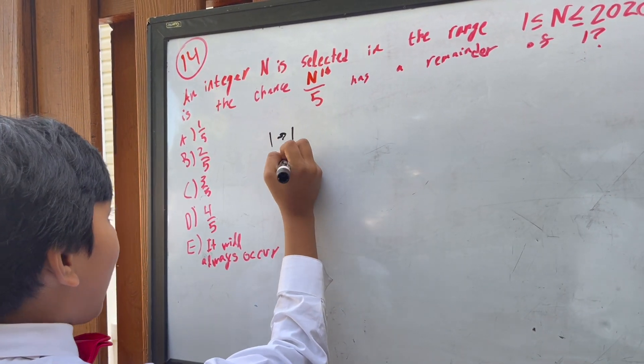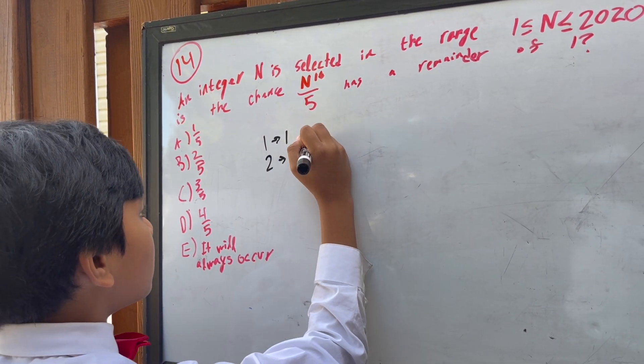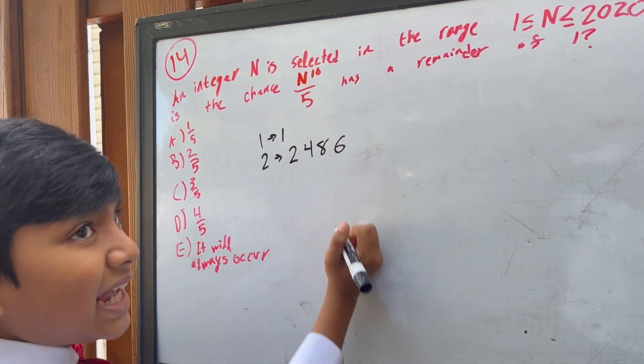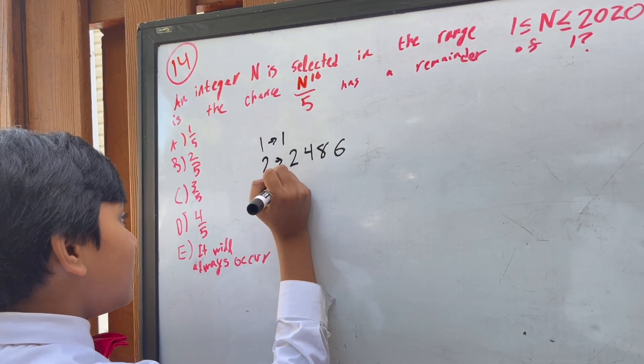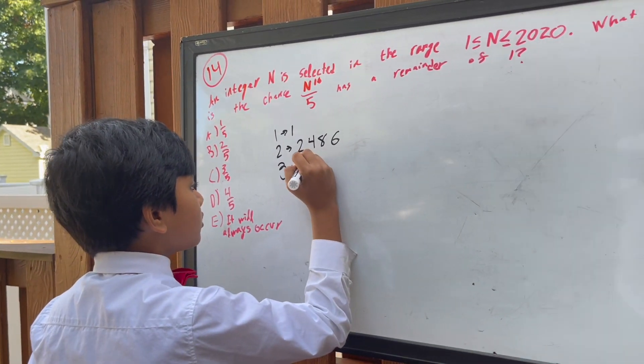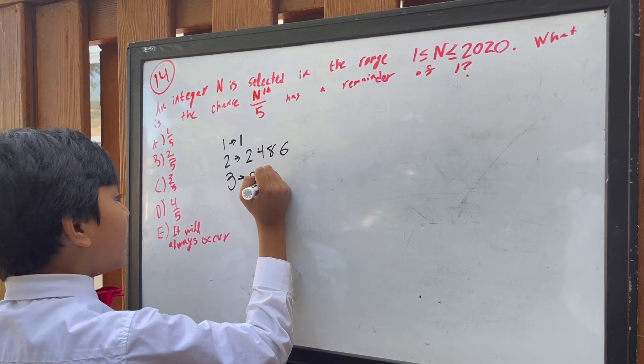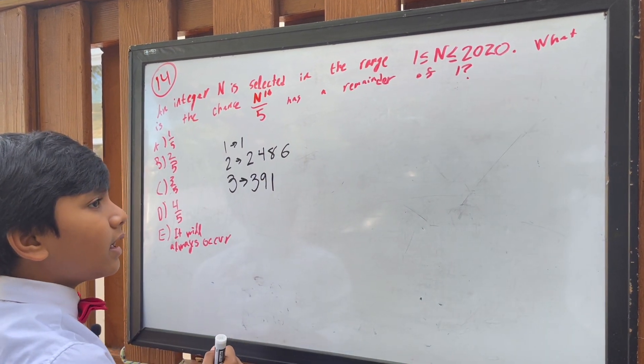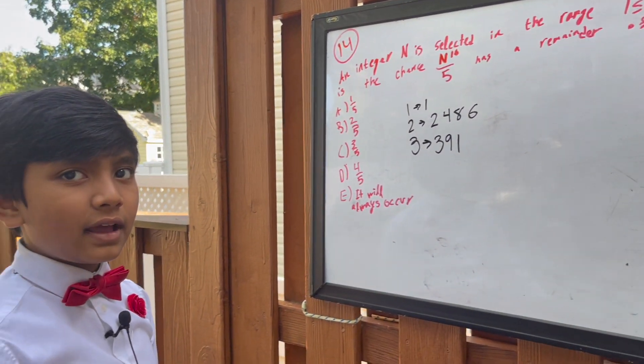2 has the pattern 2, 4, 8, 6. 3 has the pattern, well, let me think about it. 3, 9, 1, and I believe that's that.